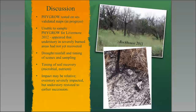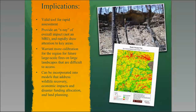These burn severity maps are a valid tool for rapid assessment. They provide an X-ray — not necessarily an MRI — but they give you an idea of where to go next and what needs to be evaluated and researched more. They warrant more calibration for the region for future large-scale fires. I also think they can be incorporated into models that address wildlife recovery and land planning, and also economic impacts. During the fires, FSA had only perimeter maps to allocate disaster funding, whereas some landowners had severe burns and others had mostly low to moderate burns — and those with severe burns will take much longer to recover. We've actually discussed developing economic models for situations like that.